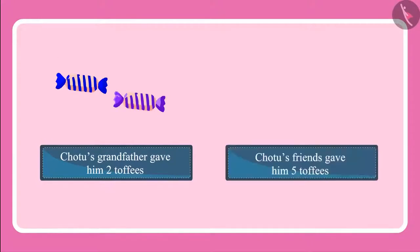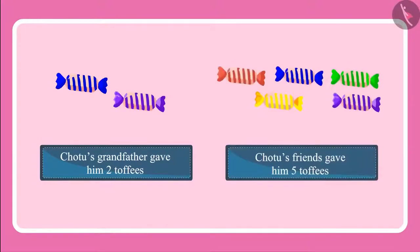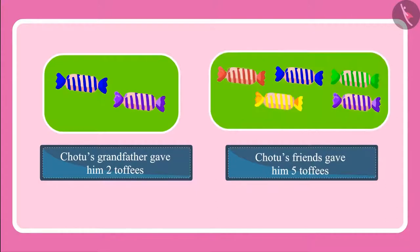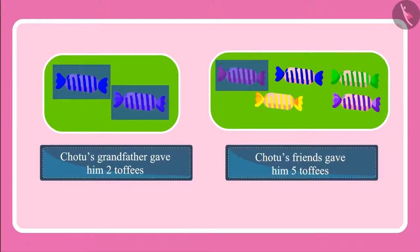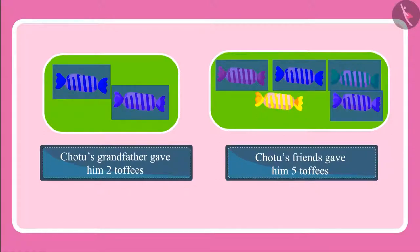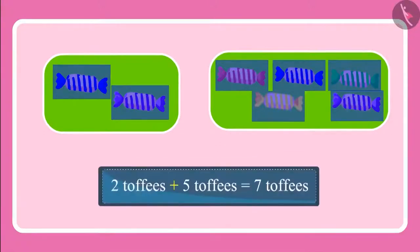And his friends gave him five toffees. Two toffees and then five more toffees. Come children, let's count and see: one, two, three, four, five, six, seven. This means Chotu now has seven toffees with him.